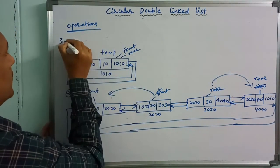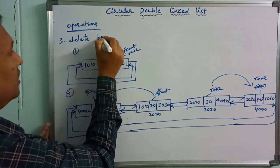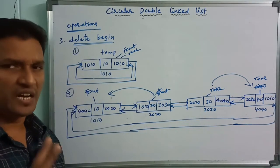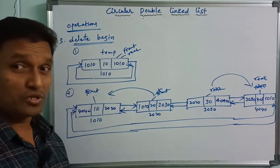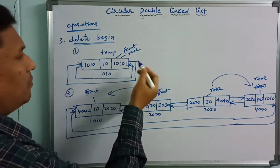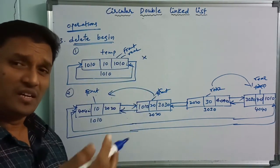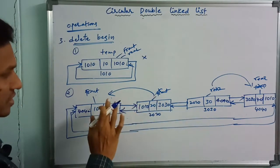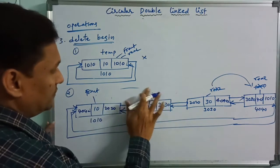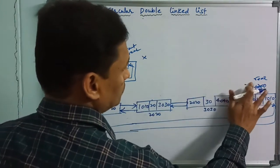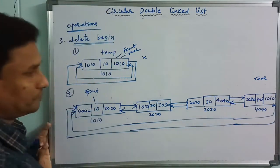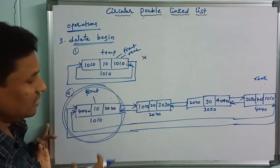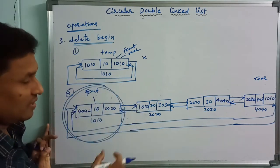Third operation: delete begin. For the first element, we need to update the front and rear. If there is the same element, we update the second element and adjust the front and rear pointers accordingly.